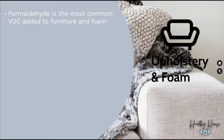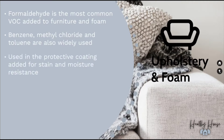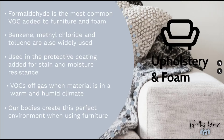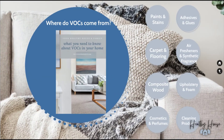Next is upholstery and foam — foam mattresses and foam in upholstery. Formaldehyde is again the most common VOC in furniture and foam, and benzene, methyl chloride, and toluene are also commonly used in foam. A lot of times it's the protective coating added to upholstery — making it stain and moisture resistant — that's the problem. VOCs in furniture foam off-gas much more when the material is warm and humid, and our bodies produce both moisture and heat, making a very conducive environment for off-gassing when we're in contact with furniture, mattresses, and cushions.